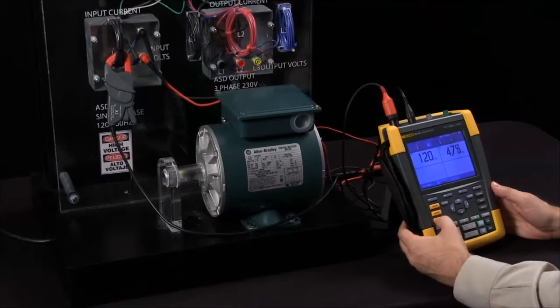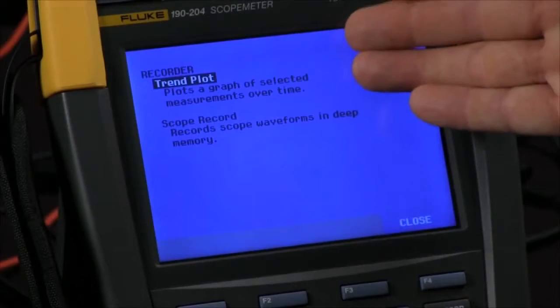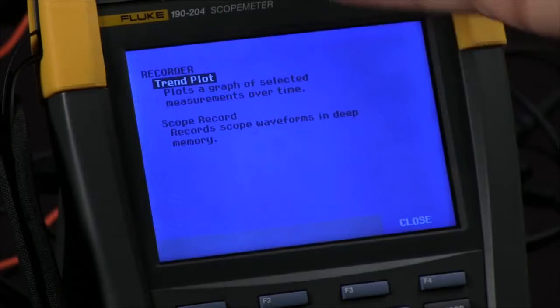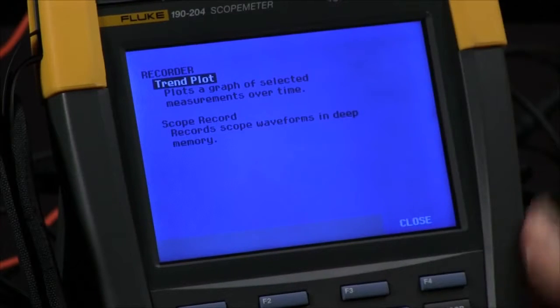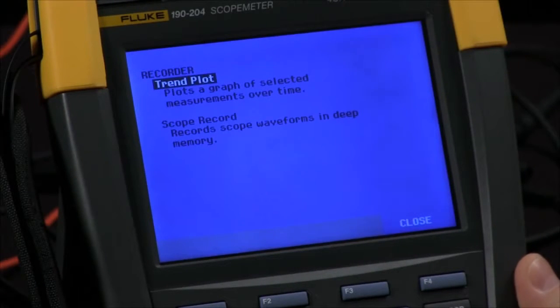Another option when you go to your recorder selection, we can either do a trend plot which is going to give us an RMS graph of my signals coming in. We can also go into scope record which is going to save the actual waveform in deep memory.